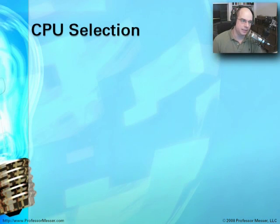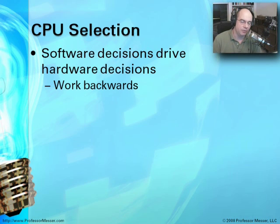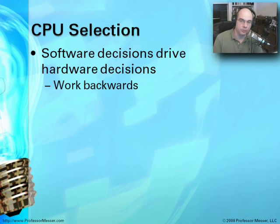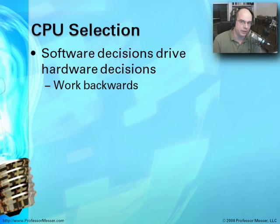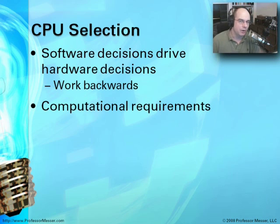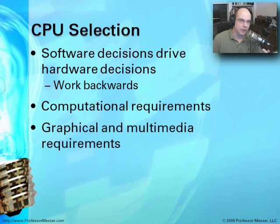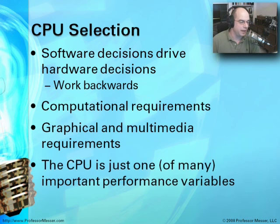When selecting a CPU, we want to think about what software we're going to run. Why are we buying or installing a new system? Is it to browse the net, perform spreadsheet calculations, or do video editing? We need to understand what we're trying to do and work backwards into deciding what type of CPU we need, considering computational requirements, graphical requirements, and multimedia needs.